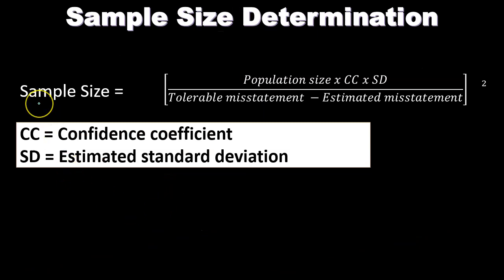For sample size determination, here's the formula. CC is the confidence coefficient, and SD is the estimated standard deviation. Sample size equals population size times CC times SD, divided by tolerable misstatement minus estimated misstatement, to the power of two.